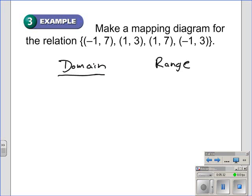The header of the first column is the domain. The header of the second column is the range. Below the domain, you list out all the domain values. The two different domain values are negative one and one.